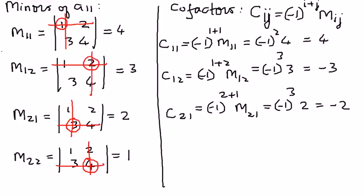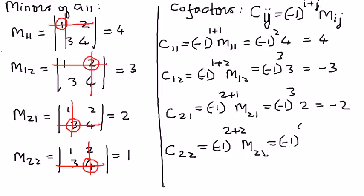Finally, the cofactor of element A22 is C22 equal to negative 1 raised to the power of 2 plus 2, times M22. Negative 1 raised to the power of 4 is positive 1, and M22 is 1. Therefore, positive 1 times 1 is equal to 1, so C22 equals 1.